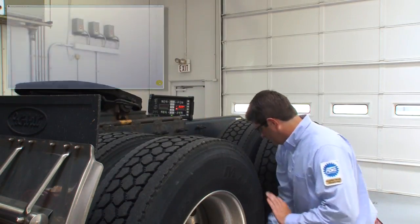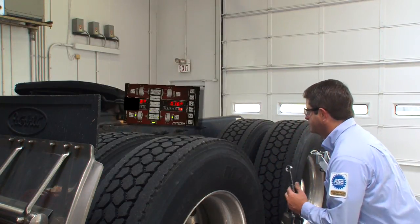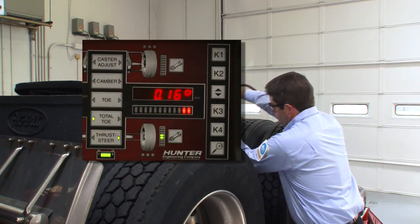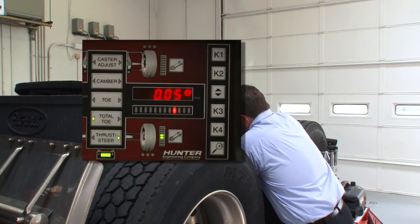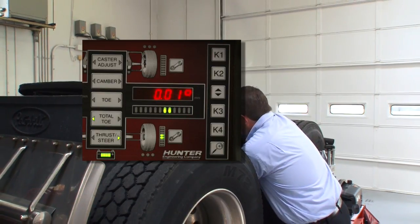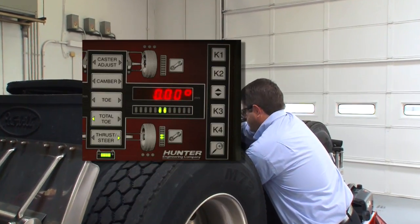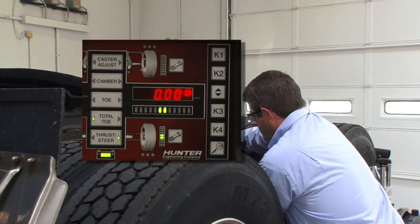The optional wireless remote is very handy for working around these vehicles. Besides observing adjustments, you can control the entire alignment from this single remote. It's exactly what you need, where you need it.